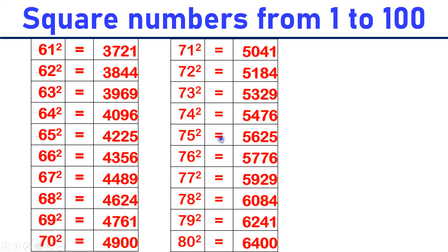75 square is equal to 5,625. 76 square is equal to 5,776. 77 square is equal to 5929. 78 square is equal to 6084. 79 square is equal to 6241.